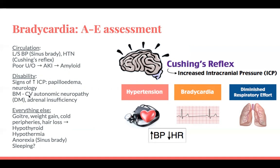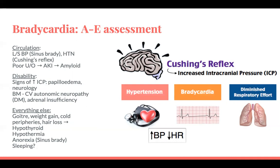Exposure findings: goitre, weight gain, cold peripheries, hair loss — think hypothyroid. Hypothermia can be another cause of sinus bradycardia, as can eating disorders like anorexia. Also check when the observations were done — if the patient was sleeping, they can develop bradycardia.